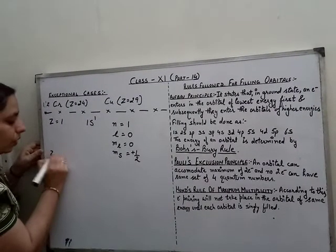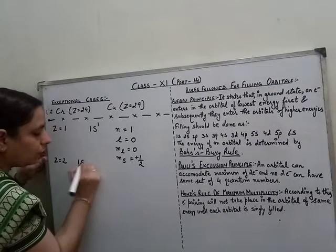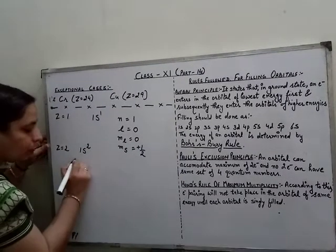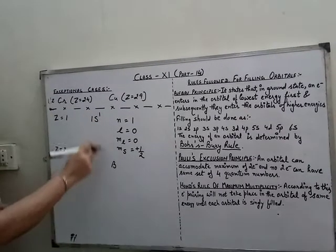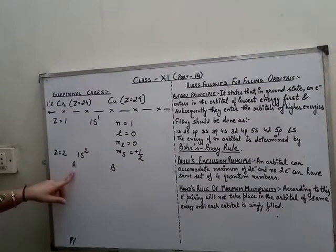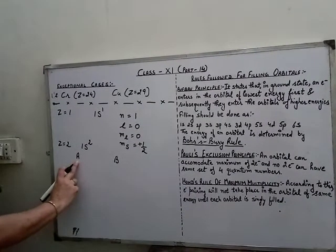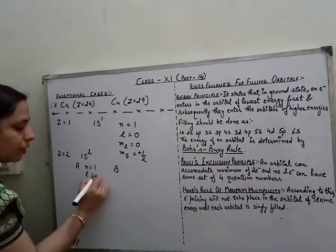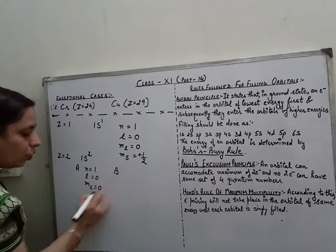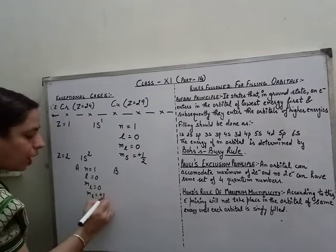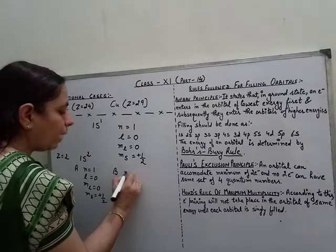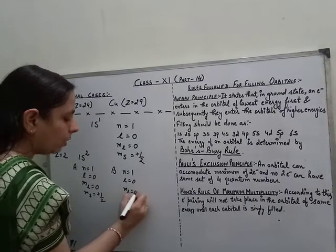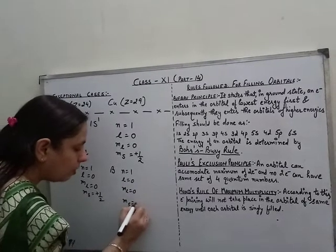Moving on to the element with atomic number 2, its electronic configuration is 1s2. We have 2 electrons; suppose we label the first electron A and second electron B. For electron A: n=1, l=0, ml=0, ms=+1/2. For electron B: n=1, l=0, ml=0, ms=−1/2.